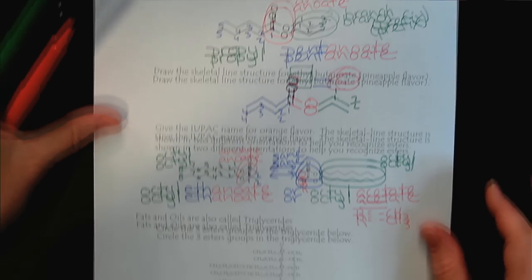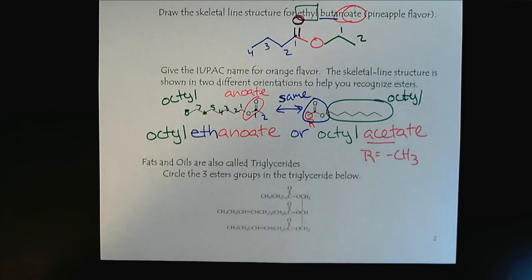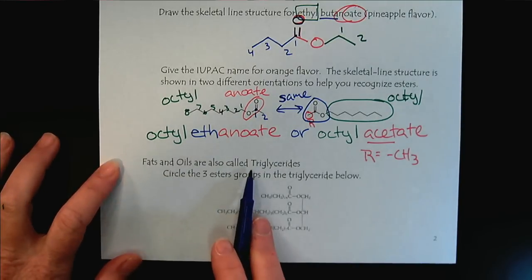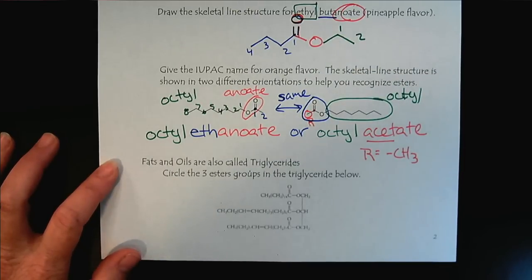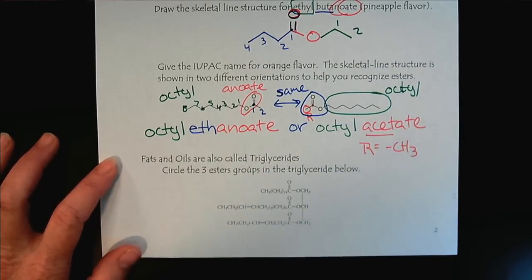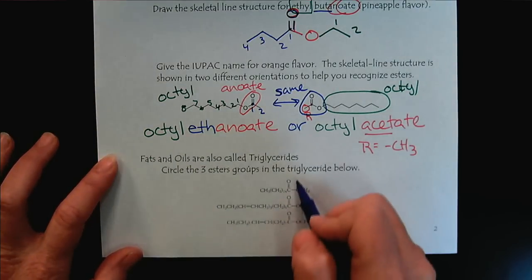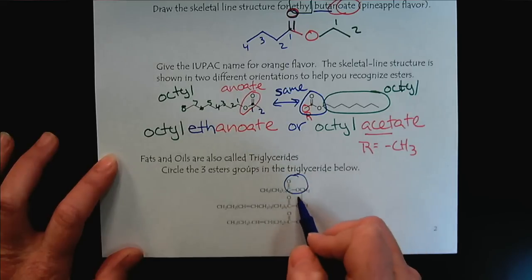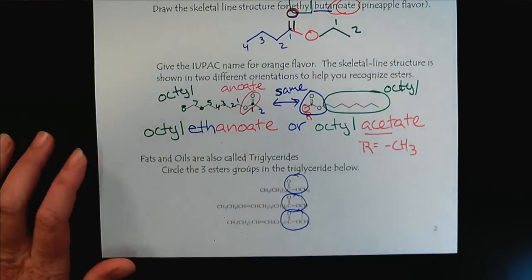So, esters are very important. When we get to the chapter where we study fats and oils, fats and oils are called triglycerides. Why? Because there are three ester groups present. So, one, two, three.